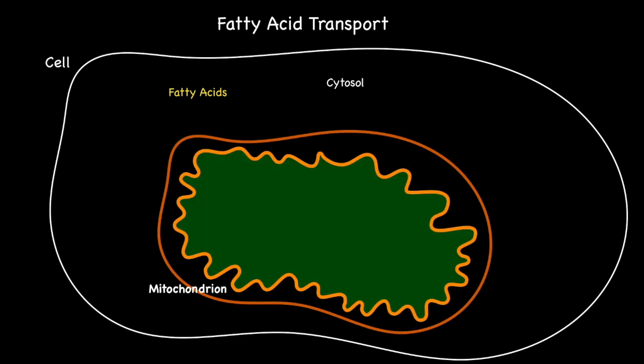Here is an illustration of an enlarged mitochondrion within the cytosol of a cell. Mitochondria are surrounded by not one but two membranes: the outer mitochondrial membrane which is highly permeable to small substances, and the inner mitochondrial membrane which is not.